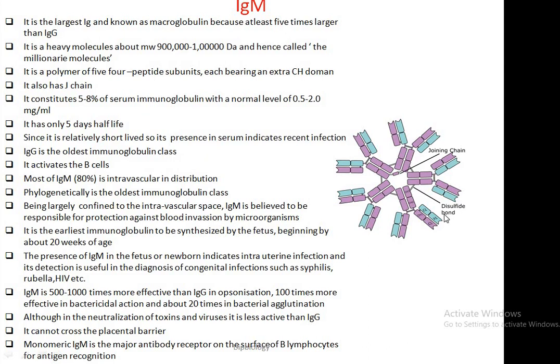IgM is a polymer of five subunits, each bearing an extra CH domain. It constitutes about 5–8% of serum immunoglobulin with a normal level of 0.5–2 mg per ml. It has only a five-day half-life, and since it has a short life, its presence indicates recent infection.